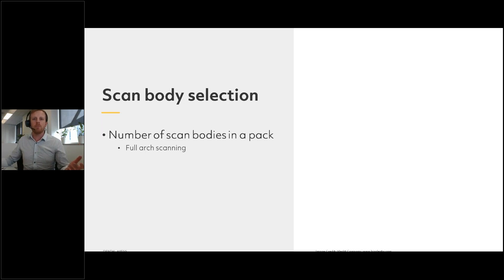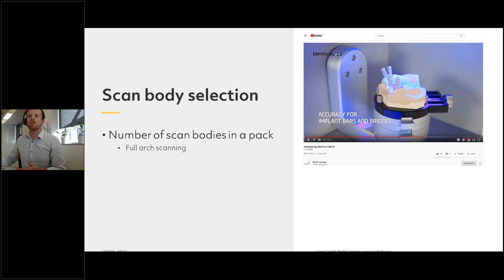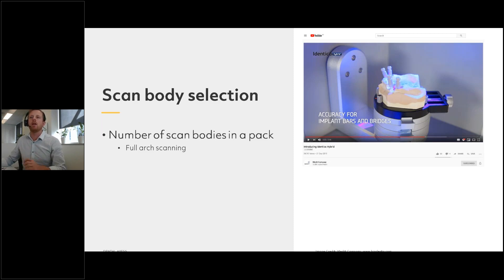Thinking about generic scan bodies, consider full arch scanning — like this example from the Medit YouTube channel with a four-implant case for a full arch implant bar or bridge. You need to think about how many scan bodies are in the pack you purchase. In this case you need four. It's much more accurate to have all four scan bodies in place when scanning rather than shifting one between locations, because that introduces human error — you might subtly move the model, which is not good when milling a bar.